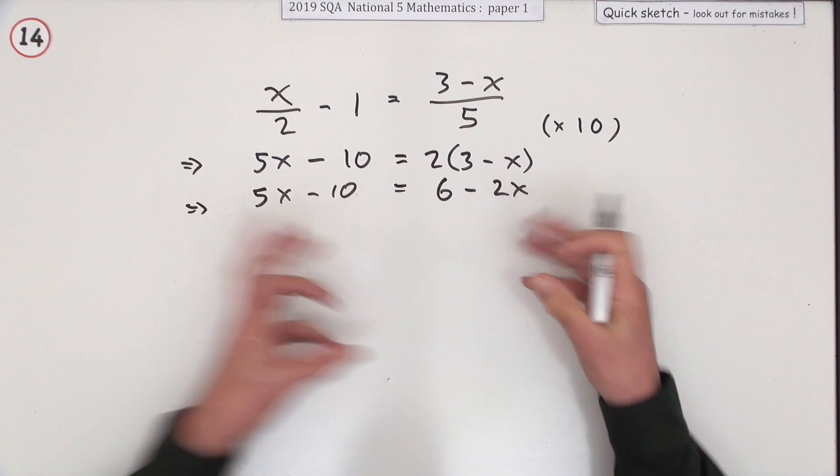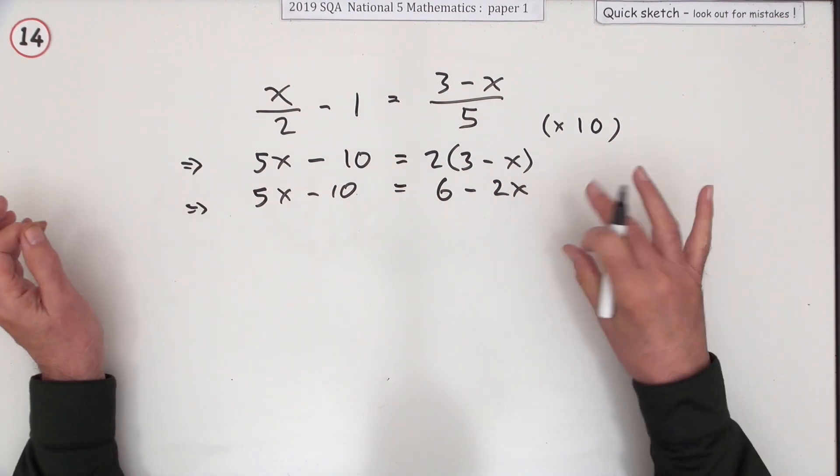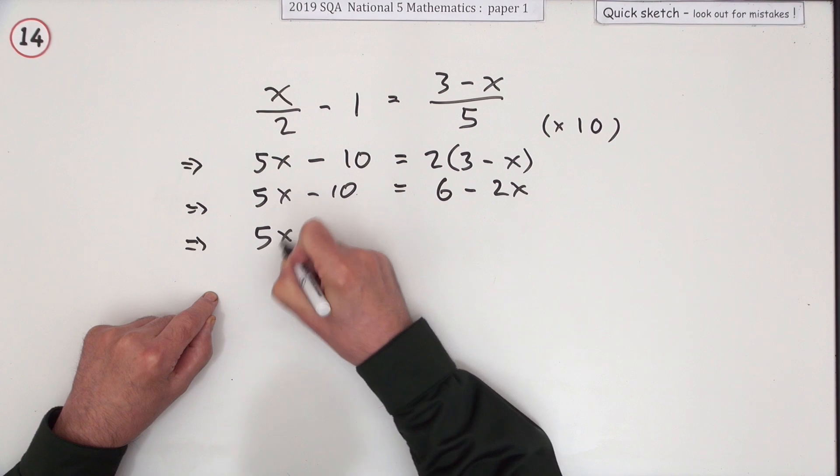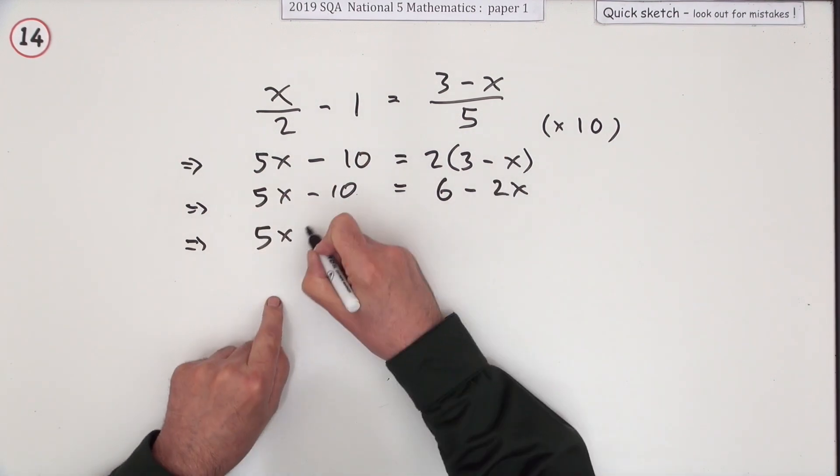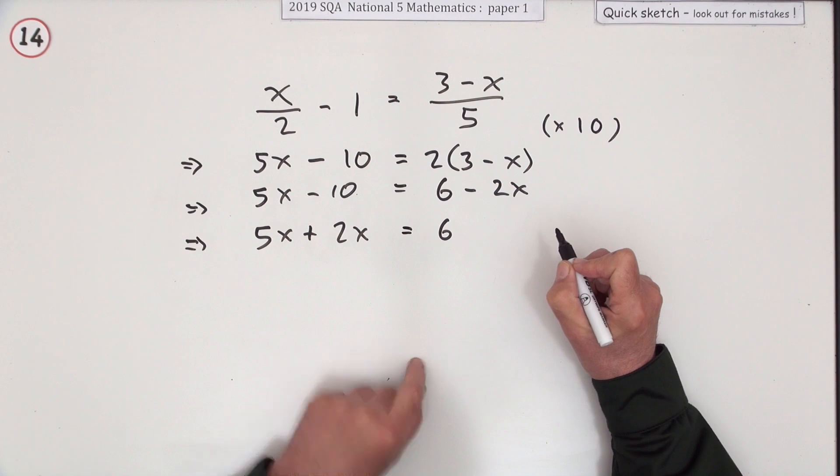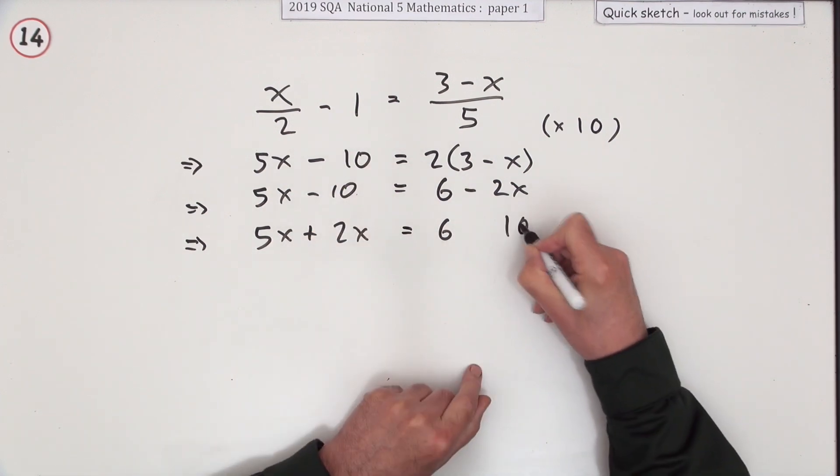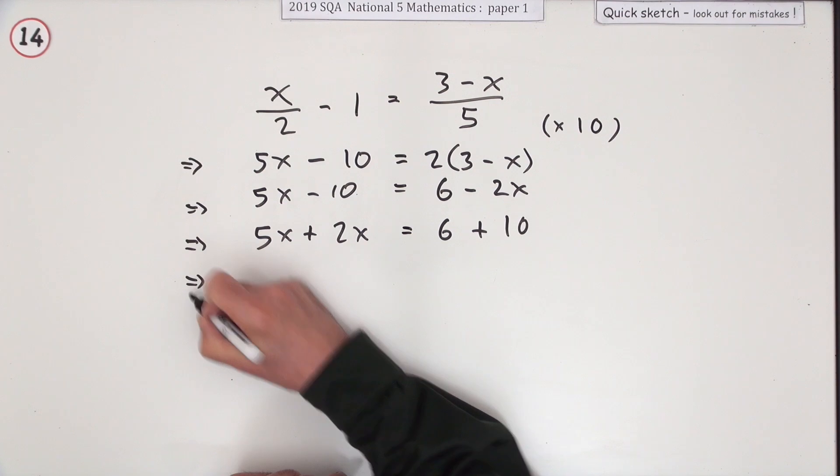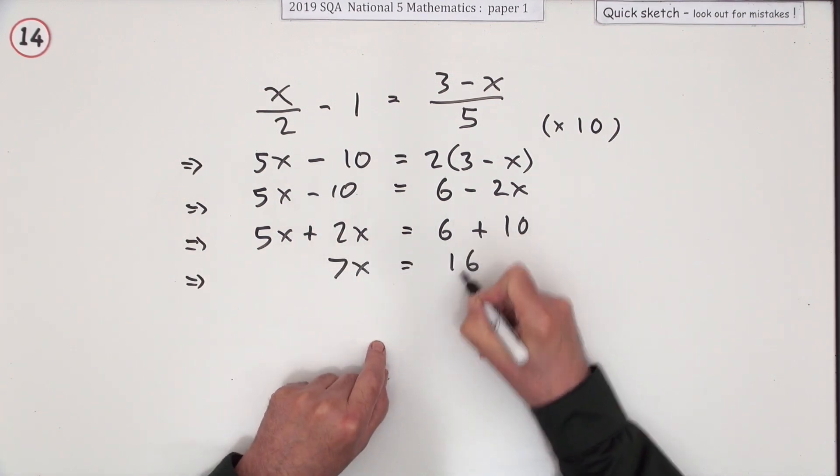Right, now sort the knives and forks and spoons into their respective places. Keep the x's on this side, bring the two x over as a plus two x, keep the six - it was take away, so now it's add. Finally tidy it up: there's seven for the x's, that comes to 16.